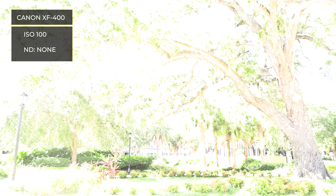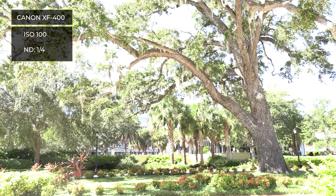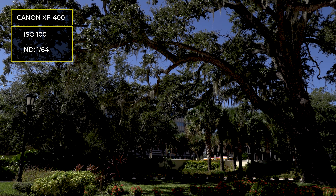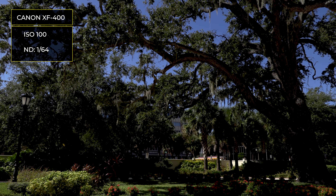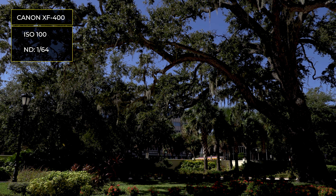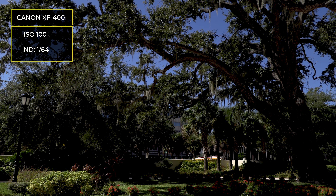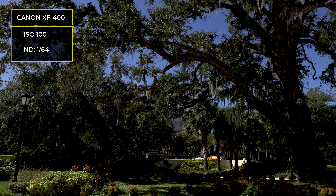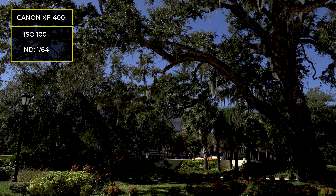Here's a shot at 100 ISO, which is the lowest this camera will go. It's all blown out as you can see. Same shot — I've flipped to the ¼ ND filter, which filters out ¼ of the light coming through the lens. Now with the ¼ ND filter, that looks pretty good to me. Here we are again with no ND filter and everything is pretty blown out.